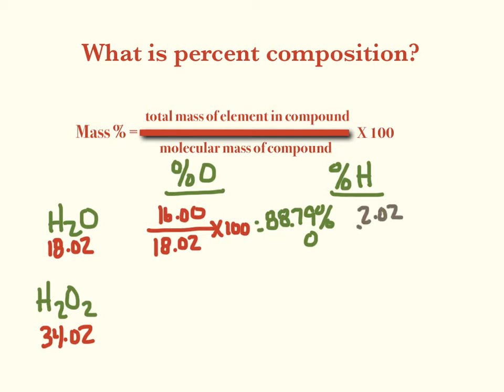So that ends up being 2.02 over 18.02. So out of the 18.02 grams, 2.02 of it is due to hydrogen, times 100, and we end up with 11.21%. Now I know you could have figured it out from this right here. If 88.79% of it is oxygen, then the rest of it had to be hydrogen, but I wanted to show you that math anyways.